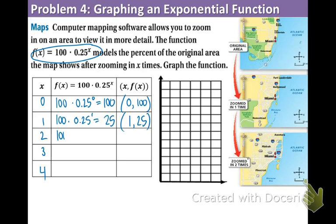And basically we're just cutting 100 into 1 fourth, which is just 25. Just think of the quarters. 1, 25. Now plug in the 2. 0.25 to the 2nd. And when you multiply that by 100, you get 6.25. So as you can see, the more times you zoom in, the area being shown is less. Because you're focusing on a smaller section.